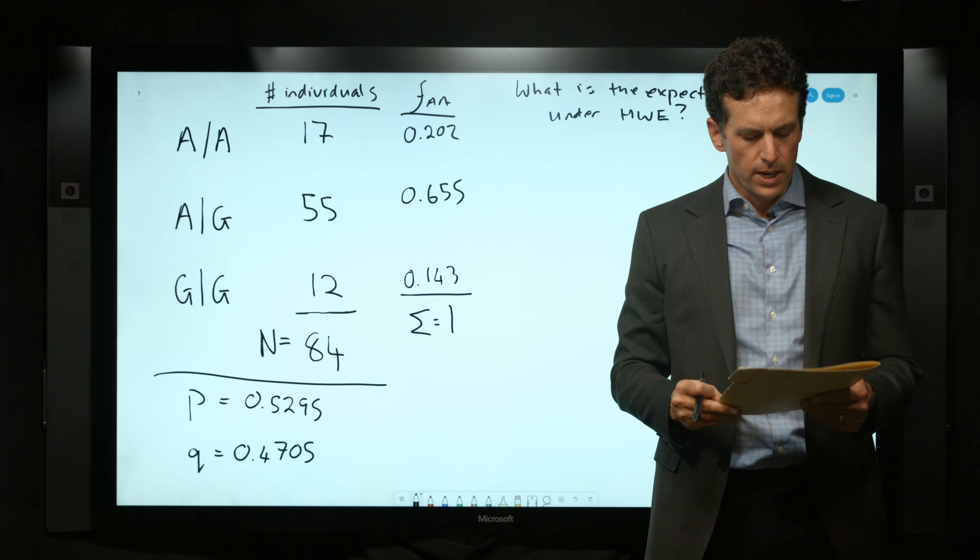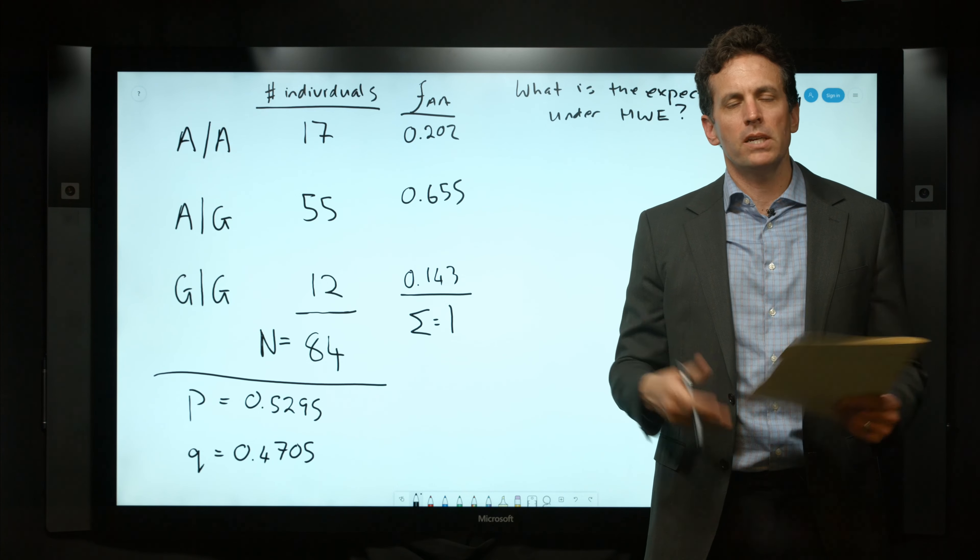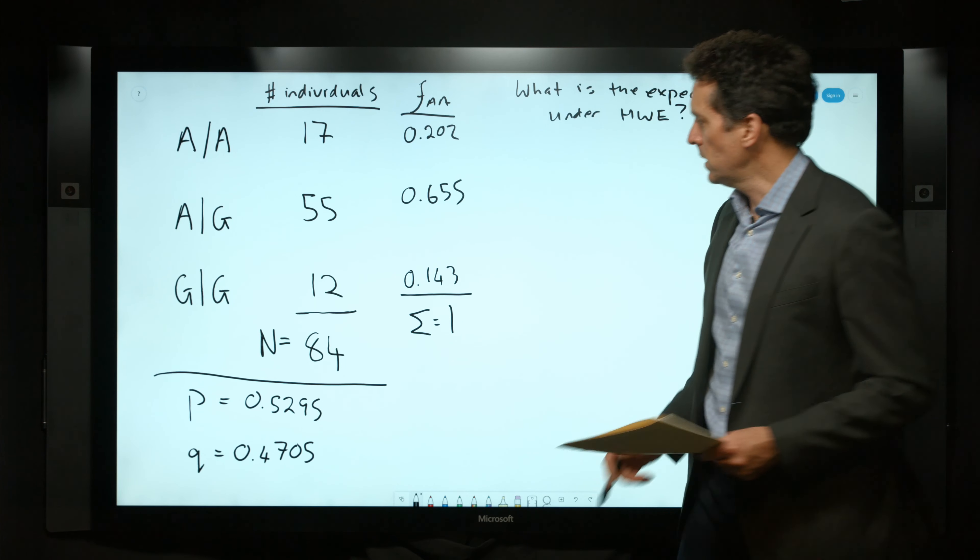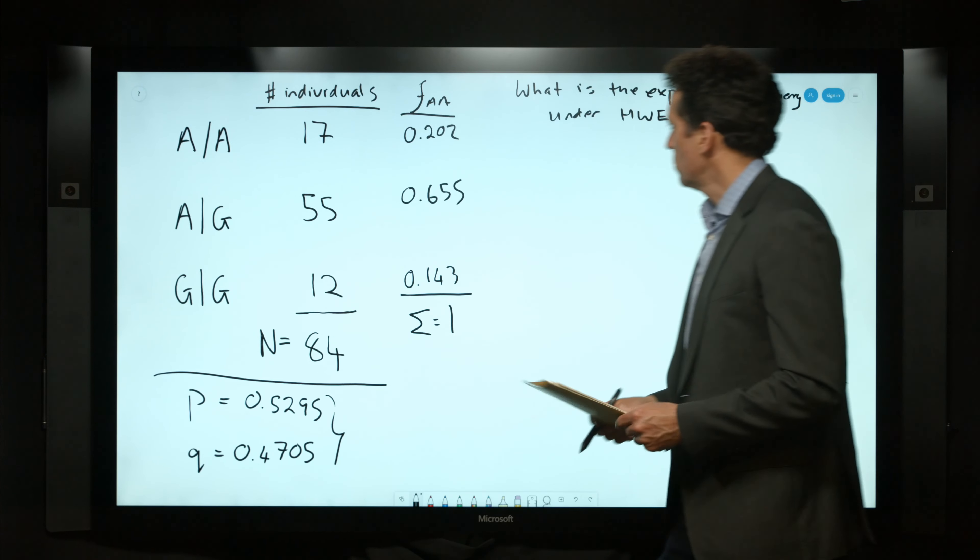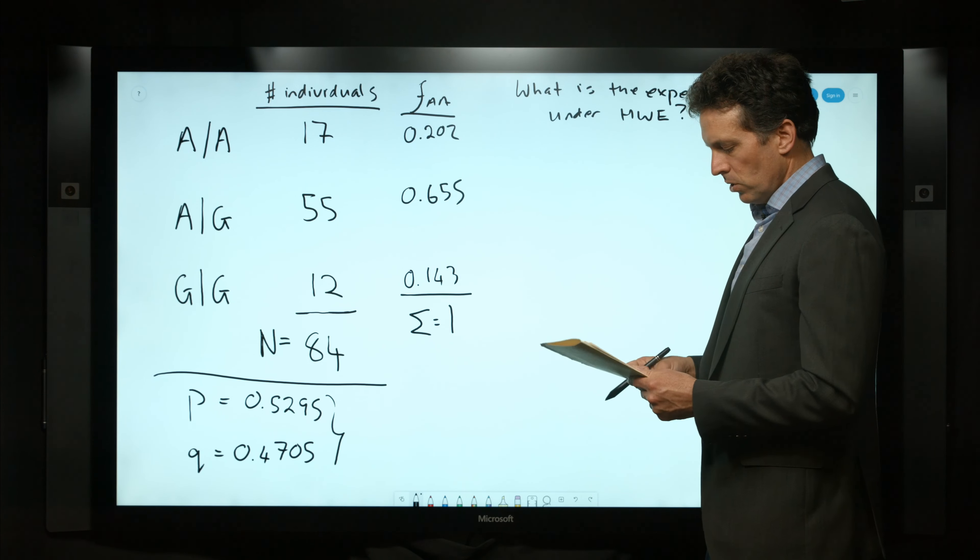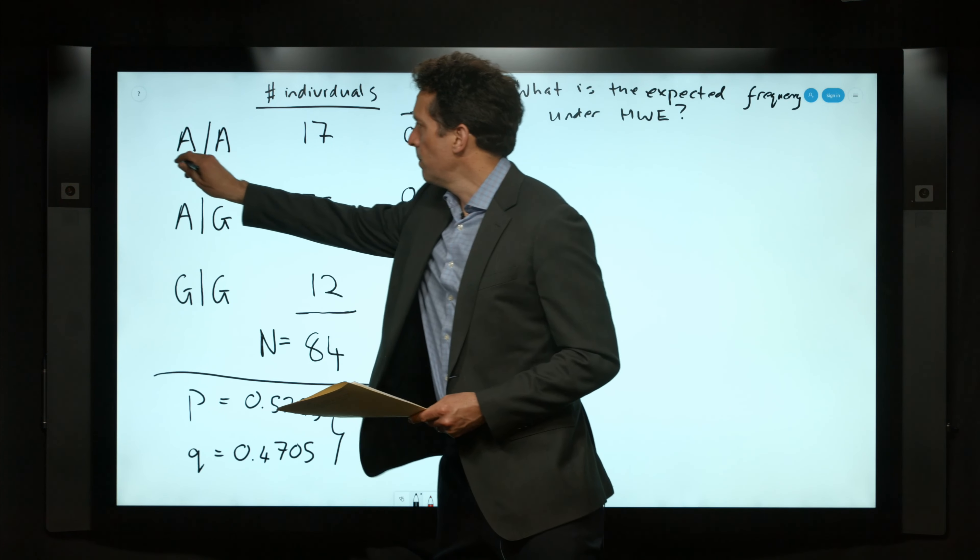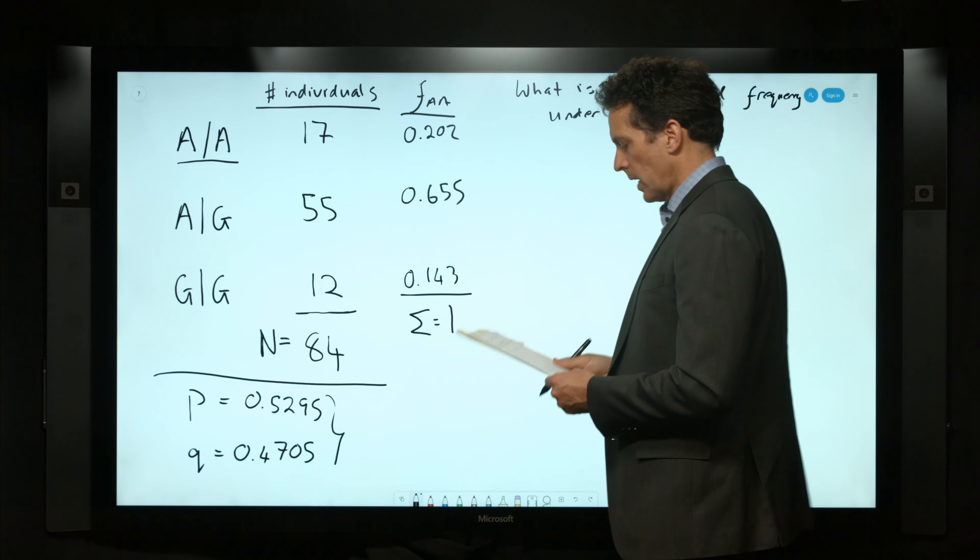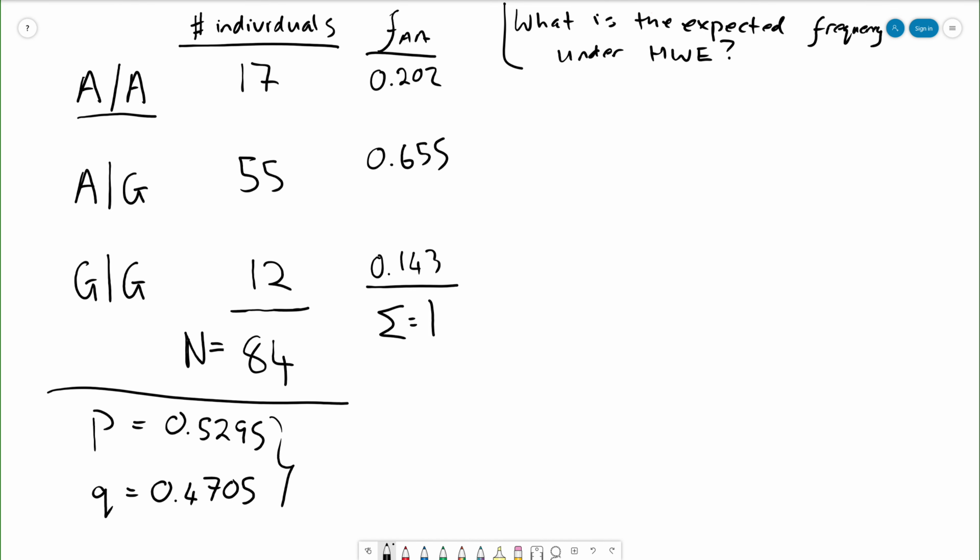Now let's compute the expected genotype frequencies given these allele frequencies. For the A/A genotype, what do we expect? We expect to see that genotype frequency with a frequency equal to P², which is equal to 0.2803702.